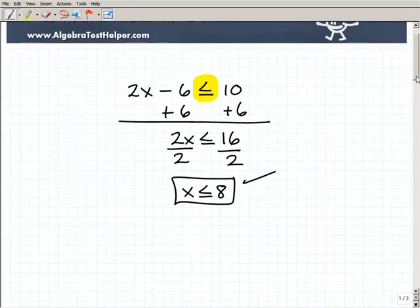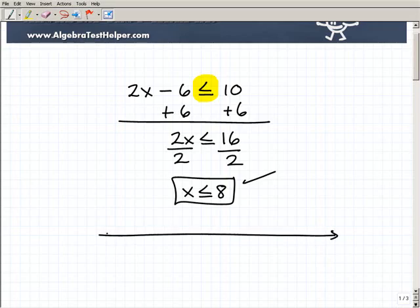I got x is less than or equal to 8, so this would be an acceptable answer, but more often than not, we like to express the solutions to an inequality on a graph. Usually I like a number line. So you can think of this as a basic number line where this is 0, this is 1, this is 2, etc. So this is a real number line.